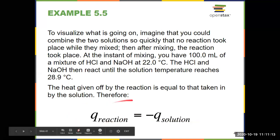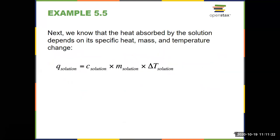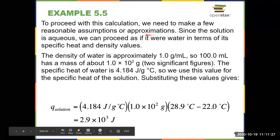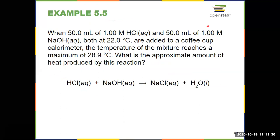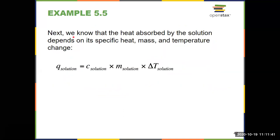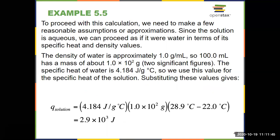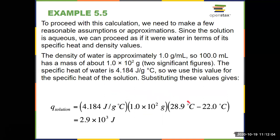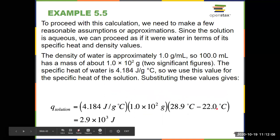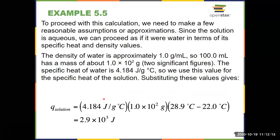To find Q_reaction, I first solve for Q_solution using MC delta T. I had 50 milliliters of HCl and 50 milliliters of NaOH — that's 100 milliliters total. Using density of water as one gram per milliliter, 100 milliliters equals 100 grams. This is an aqueous solution, so I use the specific heat for water: 4.184 joules per gram degree Celsius. The temperature change for the solution is final 28.9 minus initial 22, which is 6.9 degrees. So Q_solution equals 6.9 times 100 times 4.184, giving Q_solution of 2.9 times 10³ joules.